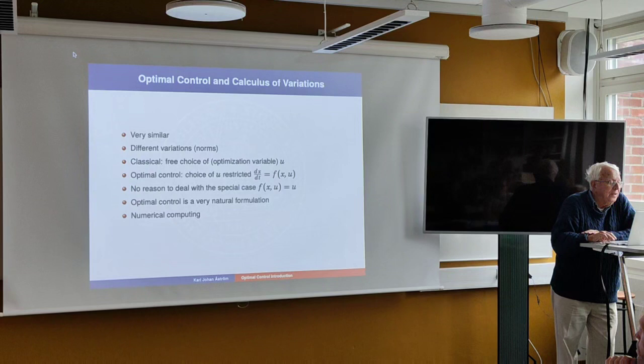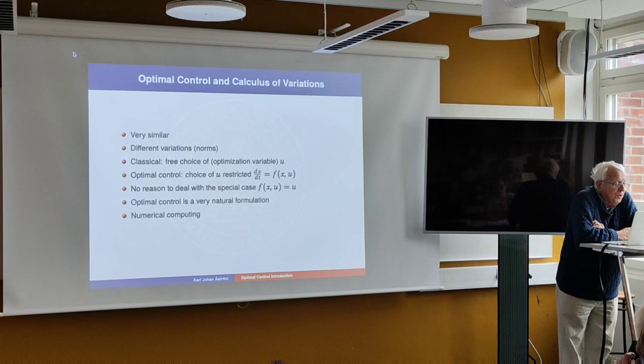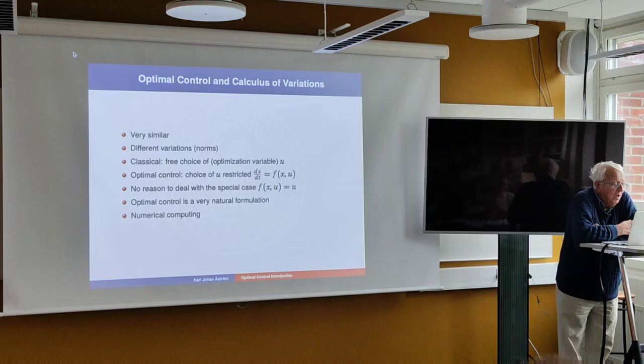Optimal control and calculus of variations are very similar. In classical calculus of variations you have free choice of x dot. In optimal control it's restricted. There's really no reason to treat optimal control as a special case separate from classical calculus of variations — optimal control is a very natural formulation. Of course, to make it useful we have to learn how to compute it.